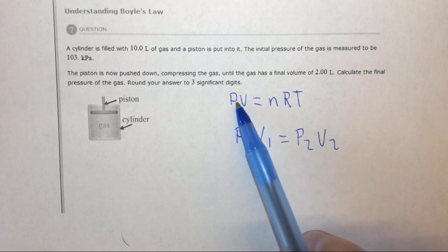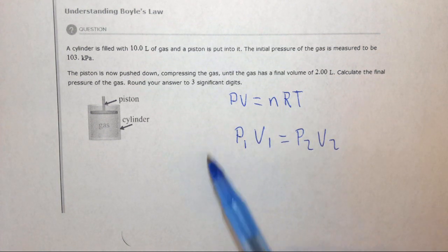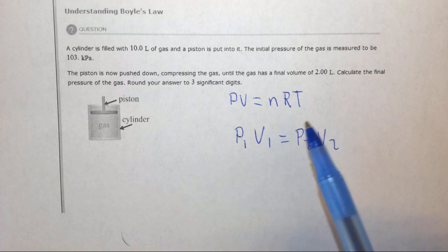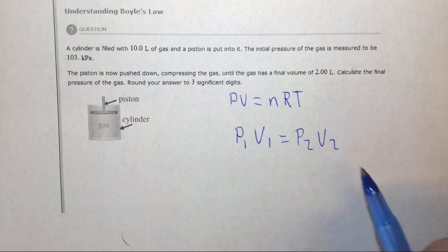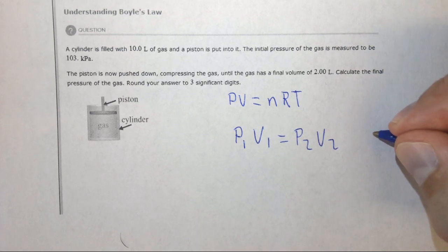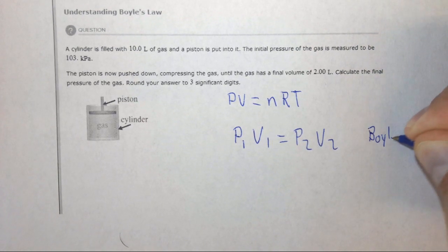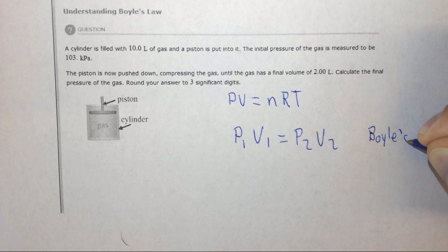In contrast, volume and temperature would be a direct proportionality because they're on opposite sides of the equation: V1 over T1 equals V2 over T2. That's Charles' Law. This particular law, P1V1 equals P2V2, is referred to as Boyle's Law.